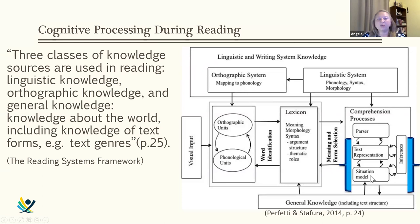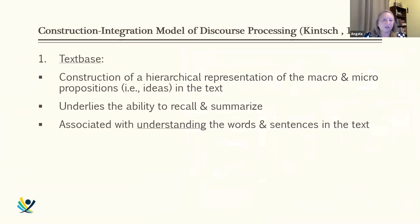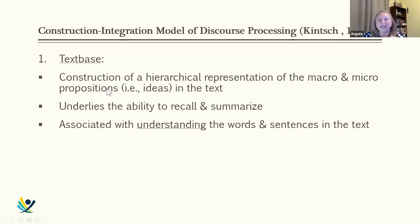Both text representation and the situation model require inferences — very important for different types of reading and reading to write. The text-base and situation model framework comes from cognitive psychology research by Kintsch (1998), building on earlier work with van Dijk. Kintsch identified three types of reading: the parser (not discussed here), the text-based level, and the situation model. Reading for a text-based model means essentially understanding what the text says.